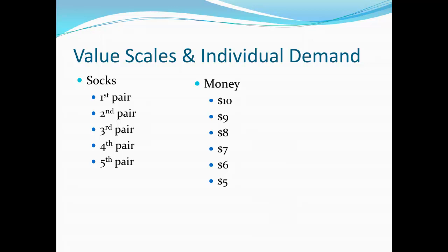Then we can think about a value scale for different sums of money. Sensibly, I'd rather have more money than less. So let's say we have a list of six different amounts of money: I'd rather have $10 than $9, $9 than $8, $7 than $6, and so on. Now the question is, am I ever asked to choose between socks and money? It shouldn't take a lot of reflection to realize that yes, we are in fact asked to choose this virtually all the time. Any time you go into a store where they have socks available, they're actually asking you: would you rather have the money in your pocket, or would you rather have these socks? So we are actually choosing between socks and money quite a bit, and therefore they have to be on some kind of value scale that has both socks and money on it.